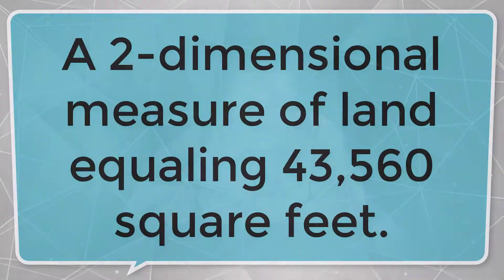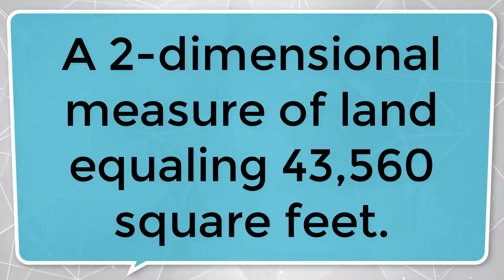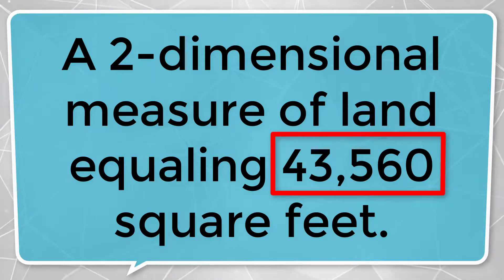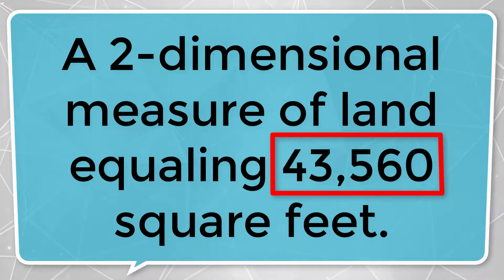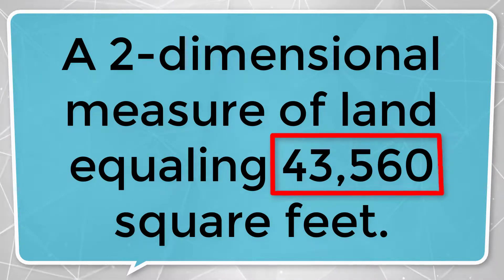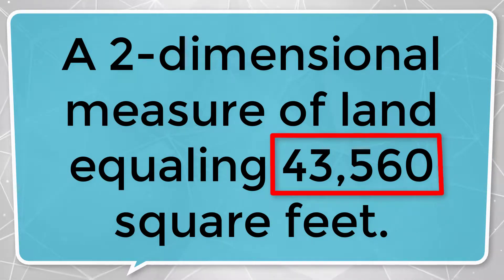Now let's take a look at the legal definition of what is an acre. An acre is a two-dimensional measure of land equaling 43,560 square feet. You have to memorize that — 43,560 square feet. Stick it in your brain.